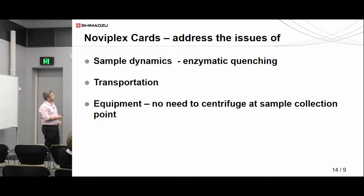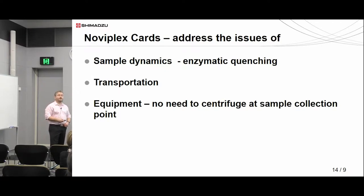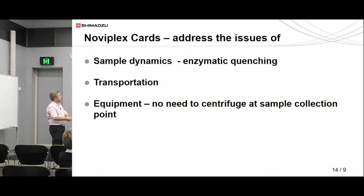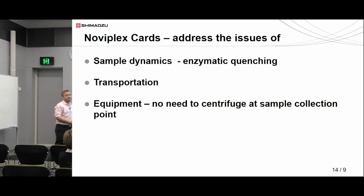I'm now going to move on to the Noviplex cards. I really like the idea of the Noviplex cards — in the case of the previous device, the metabolic arrest is done by temperature: we take our samples, put them in a fridge or freezer, and have all the problems of transporting samples from A to B. The Noviplex cards do the enzymatic quenching by size exclusion followed by drying of the sample, making them much easier to transport with no equipment needed at the collection site — no centrifuge — which is particularly important for remote settings like Papua New Guinea.